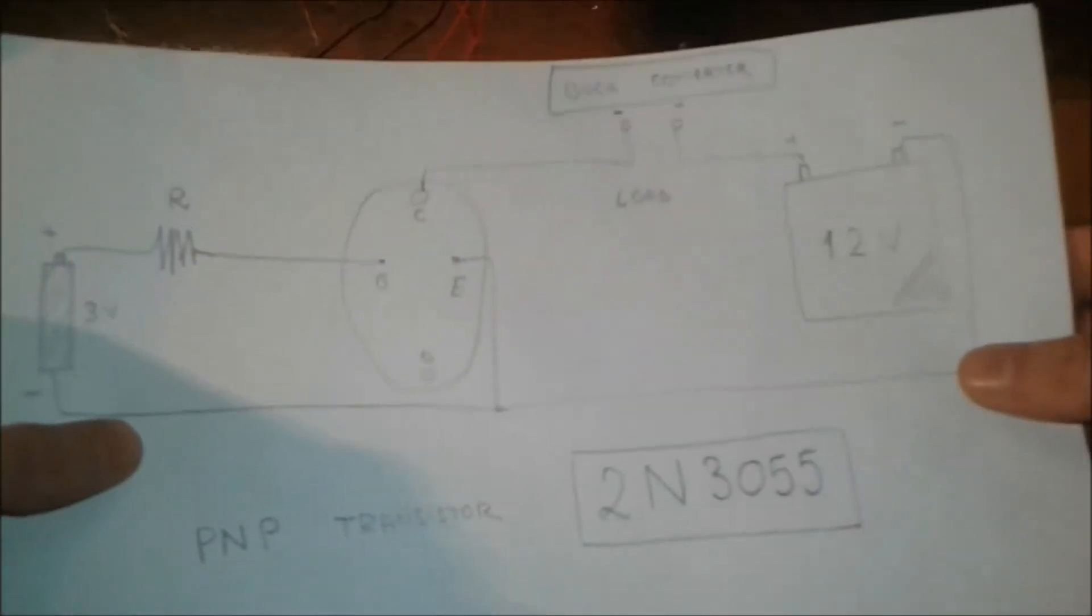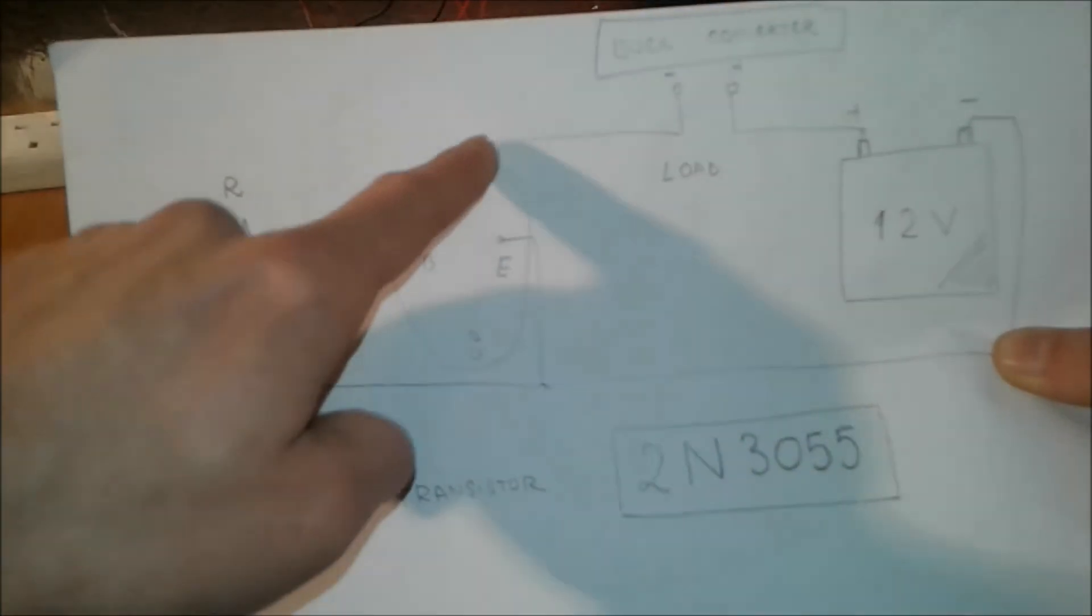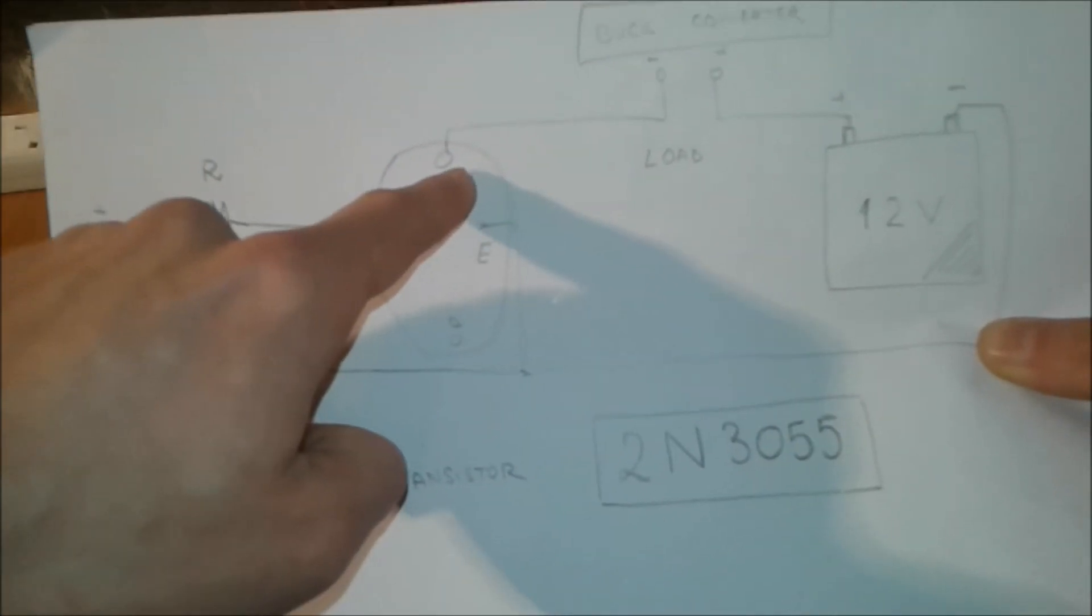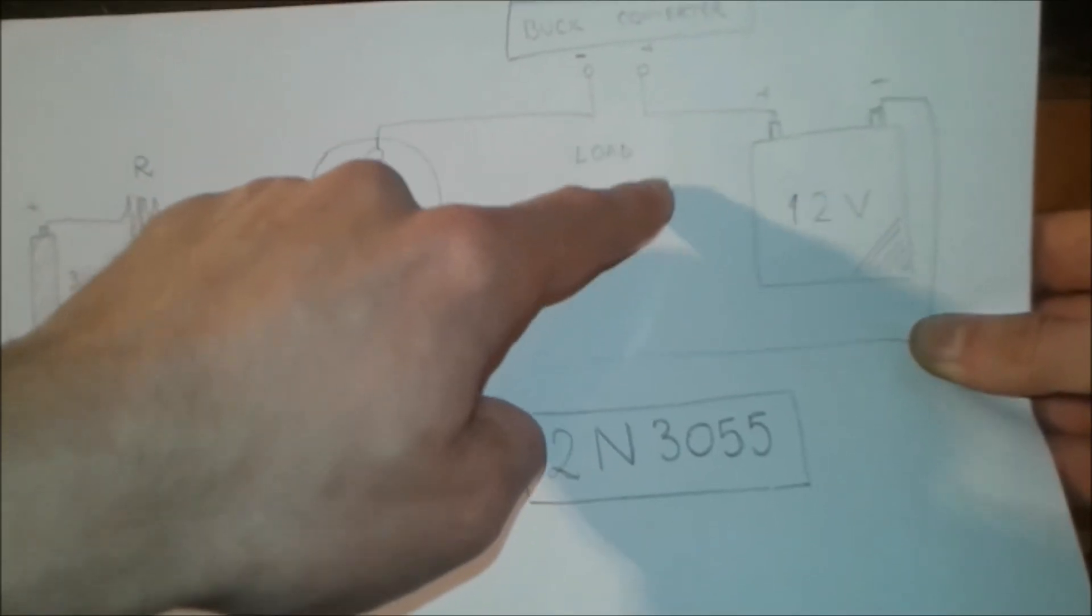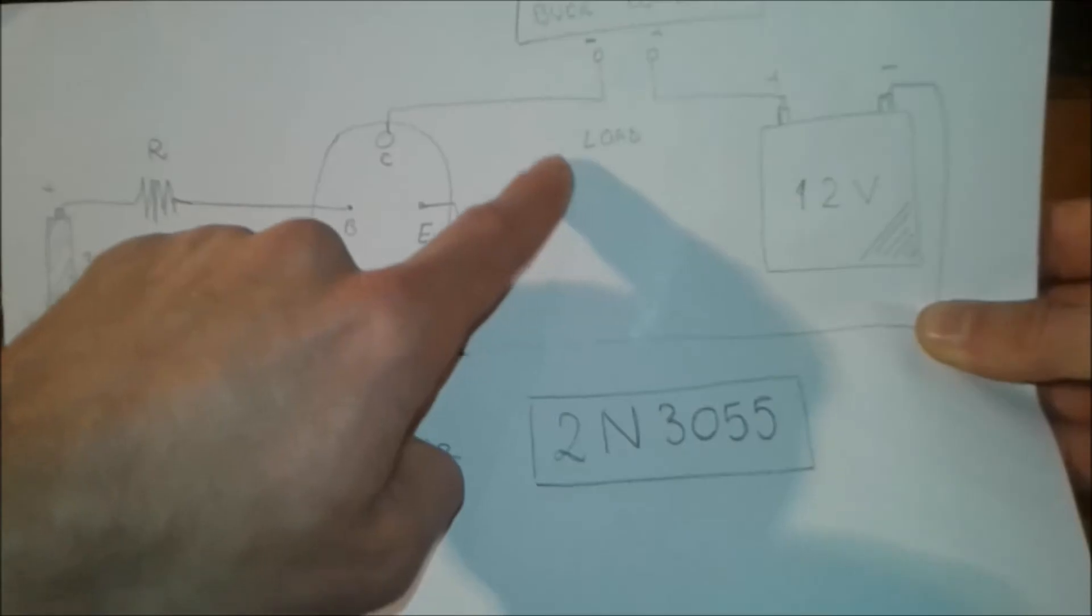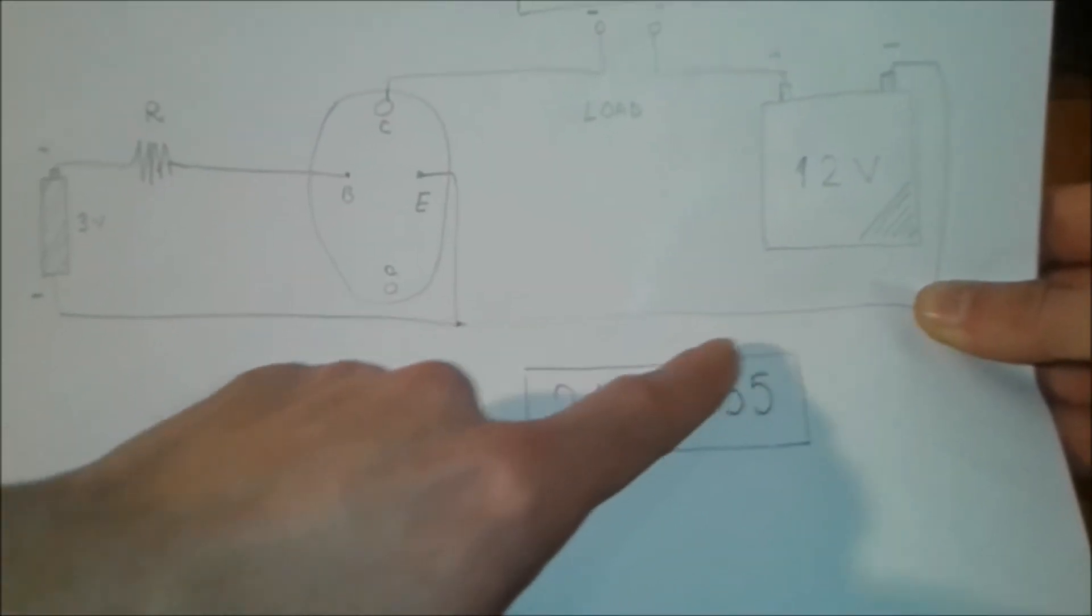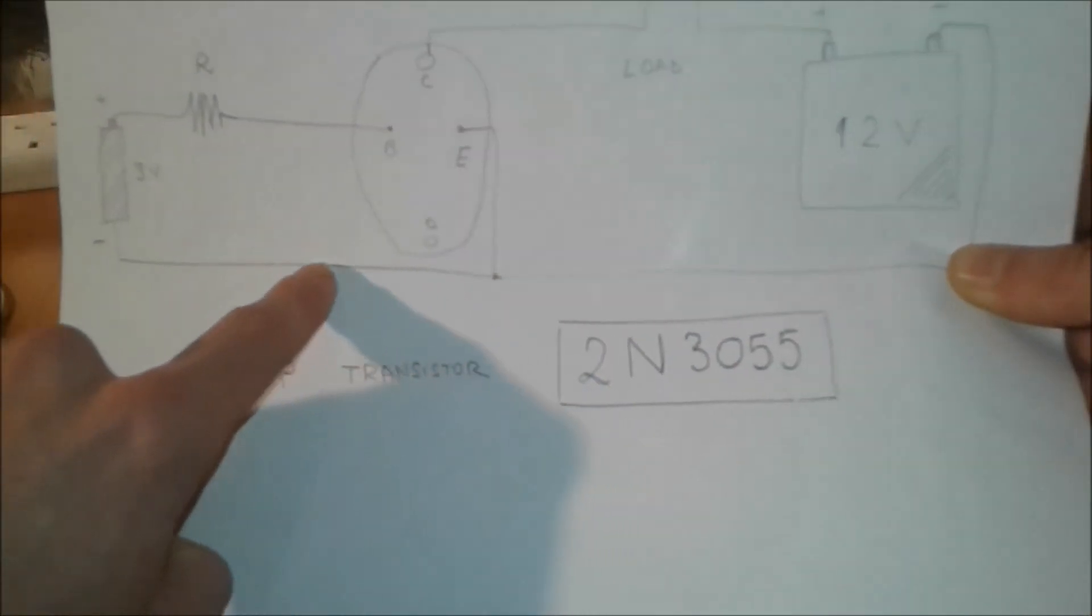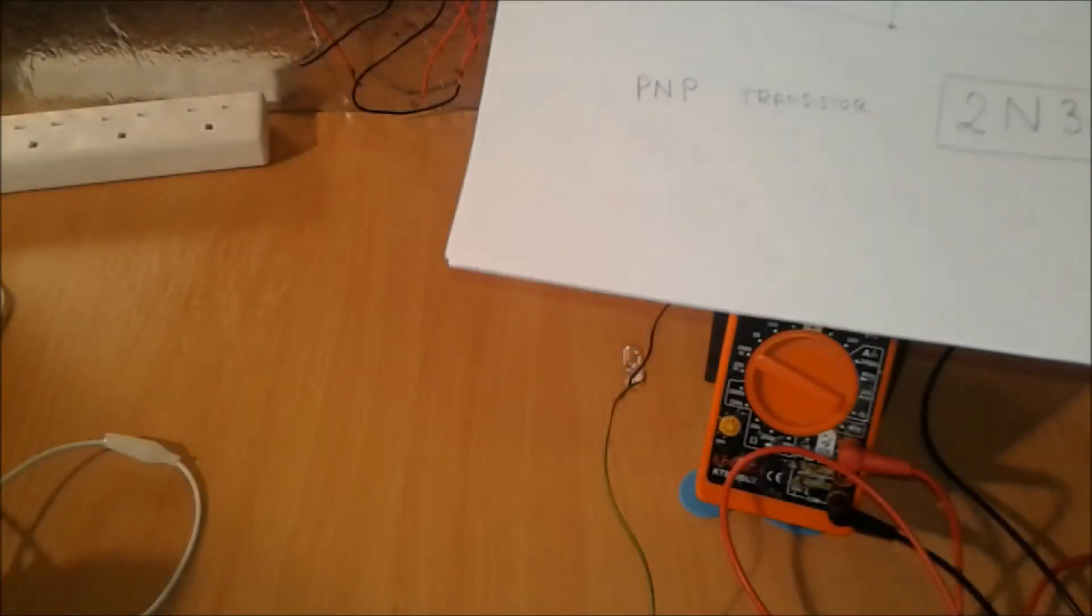We have the laptop charger, the current limiter, the buck converter, and the battery. I'm gonna show you the diagram once again - as you can see, battery, resistor, base, collector. We put a load but first we tune it with a multimeter, then the battery that needs to be charged.